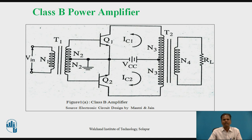Since Q1 and Q2 are not biased, or biased at zero, the base-emitter cut-in voltage is very small and if neglected, it provides a Class B push-pull operation. During the positive half cycle of the input AC voltage signal, the secondary of transformer T1 turns on transistor Q1, so transistor Q1 conducts while transistor Q2 is in the cut-off state.